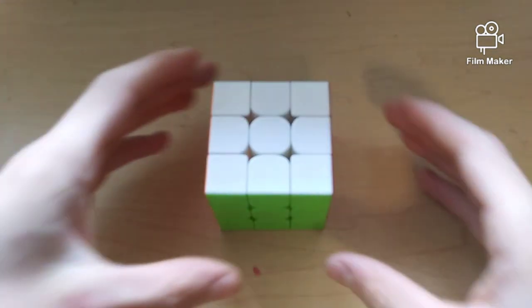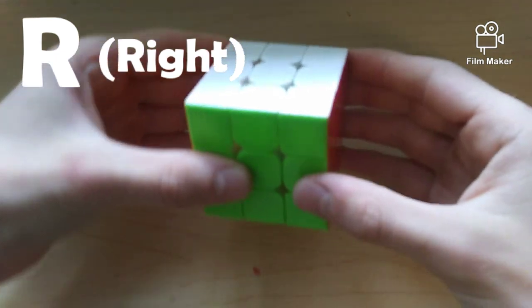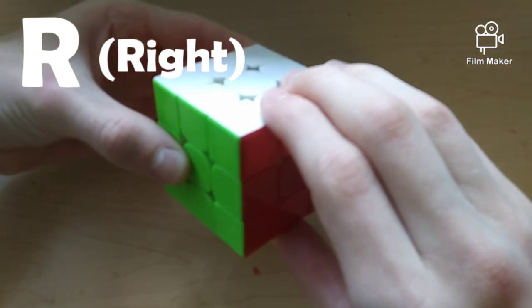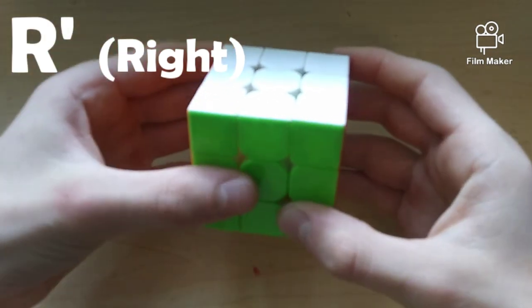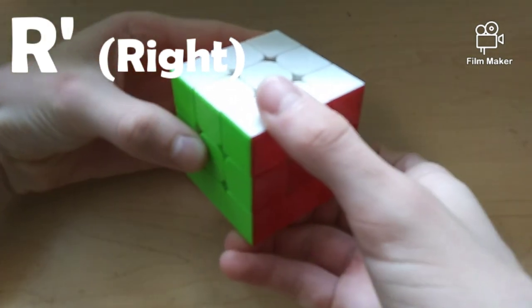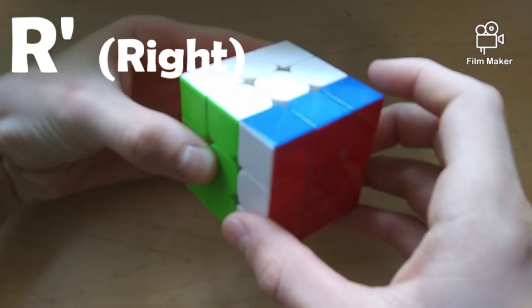To start off, we have R, which you'd look at the right side of the cube and move it clockwise. Similar to this, R' would still be R, but you move it counterclockwise.